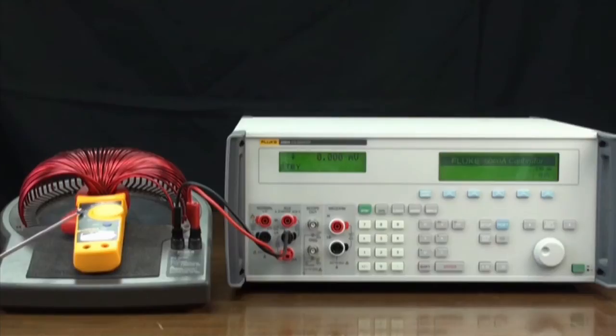This is a Fluke 322 Clamp Meter. We'll demonstrate calibration to 250 Amps.